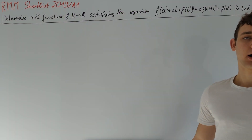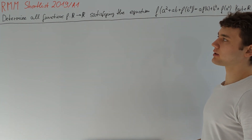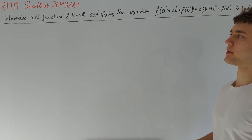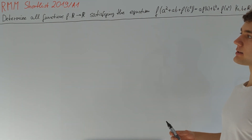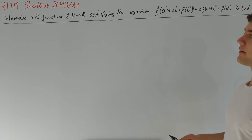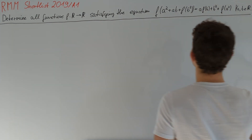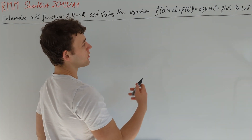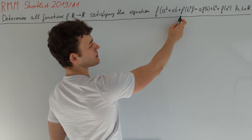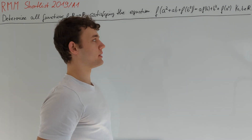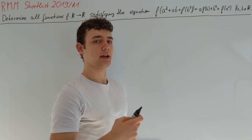In this video I will present a solution to Romania Masters of Mathematics Shortlist 2019 Problem A1. We'll have a look at the statement, which asks to determine all functions f from the reals to the real numbers satisfying the following equation: for all real numbers a and b, f(a² + ab + f(b²)) should be equal to a·f(b) + b² + f(a²).